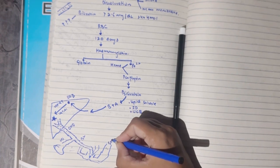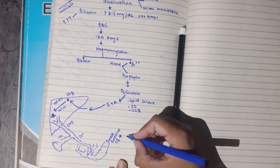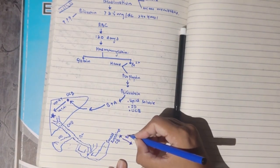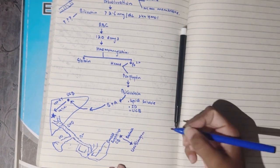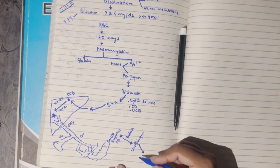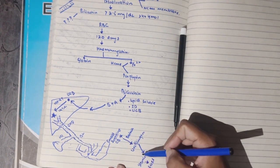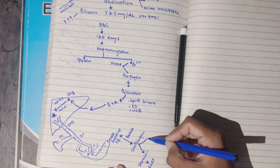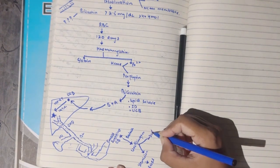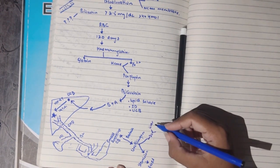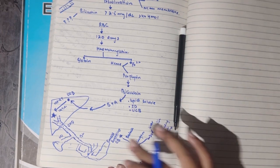In the small intestine, intestinal bacteria act on the conjugated bilirubin, de-conjugating it and converting it into a product called urobilinogen. About 80% of this urobilinogen is converted to stercobilin and excreted in the stool. The remaining 20% is reabsorbed and mostly returns to the liver via the enterohepatic circulation. This is the normal bilirubin metabolism.